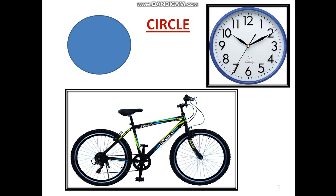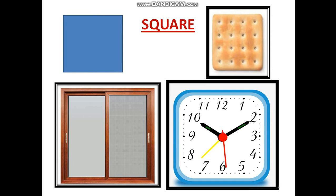Our next shape is square. Square has 4 sides and 4 vertices. Look here, we have 3 square objects like biscuit, wall clock and window. If you have a window in your room, look at the window. Is it square or a circle?